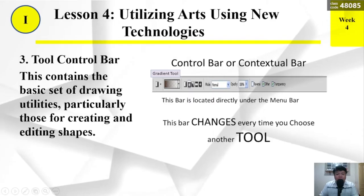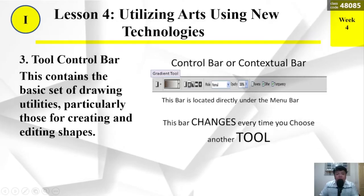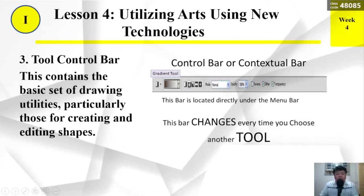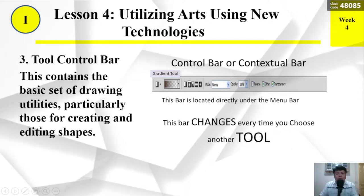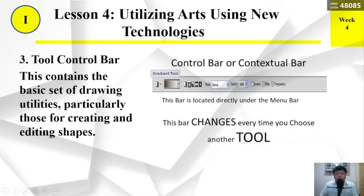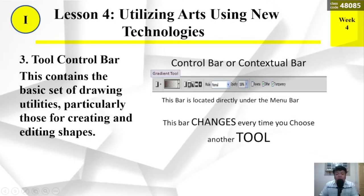Number 3: Tool Control Bar. This contains the basic set of drawing utilities, particularly those for creating and editing shapes. This bar is located directly under the menu bar, and it changes every time you choose another tool.